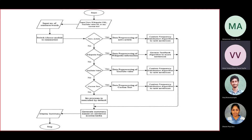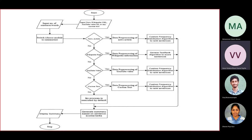For a news article URL, the data is preprocessed and we use the custom frequency distribution algorithm to rank the sentences. For Wikipedia pages, we use the GenSim TextRank algorithm to score the sentences. For YouTube and custom text, we similarly use the custom frequency distribution algorithm to rank the sentences. Once input is given, it will be processed and will display the summary.